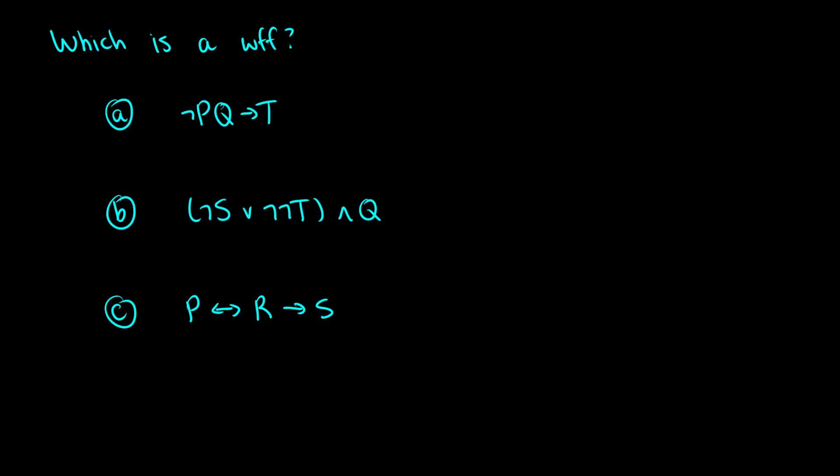As a final exercise, I want to ask which of these are well-formed formulas. We know how the rules work for negation, conjunction, disjunction, conditional, and biconditional. The first one — not-P, Q, arrow, T — is not a WFF because we have a negation for P but then a separate proposition Q with nothing to join them. We'd need something like (not-P and Q) or (not-P or Q).